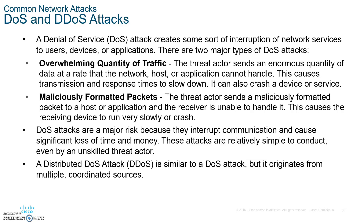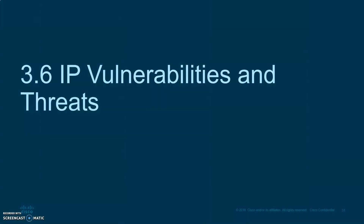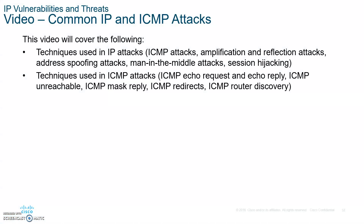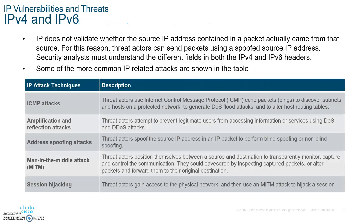Now let's look at IP vulnerabilities and threats. We have ICMP attacks, the ping of death — which can be written into a batch file or loop from several PCs to create a denial of service, making systems very slow. Windows 10 has a firewall setting that won't respond to pings. We also have amplification and reflection attacks, address spoofing, man-in-the-middle, and session hijacking.